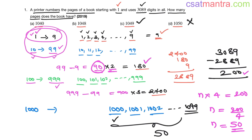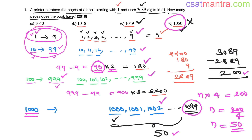Be careful not to mark 1050 in a hurry. After 999, we need 50 pages — and since 1000 is included in those 50, the last page is 1049, not 1050. This is the divide and rule method: handle pages with single digits, then double digits, then three digits, then four digits. Go step by step and the problem becomes very easy.